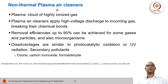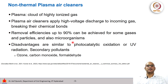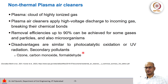Then there are plasma air cleaners. Plasma can be seen as a cloud of highly ionized gas. These plasma air cleaners apply high voltage discharge to the incoming gas, which may break the chemical bonds of the pollutant. Removal efficiency of up to 90% can be achieved for some gases and particles, and these can also remove microorganisms. However, the disadvantages are similar to photocatalytic oxidation and UV radiation, as these processes can again lead to formation of ozone, and sometimes CO and formaldehyde.